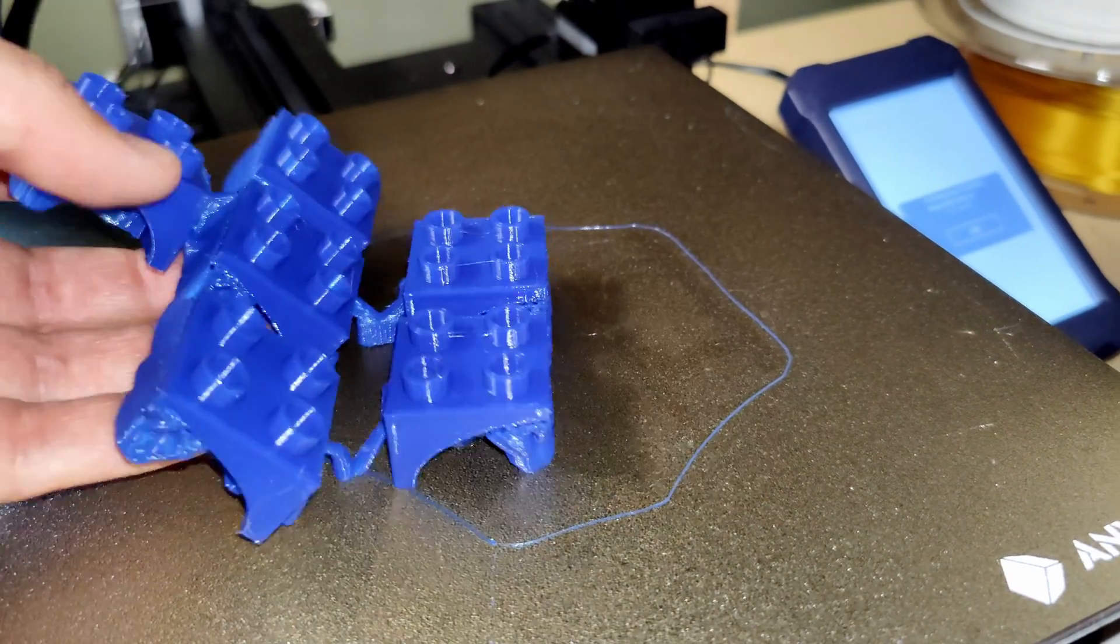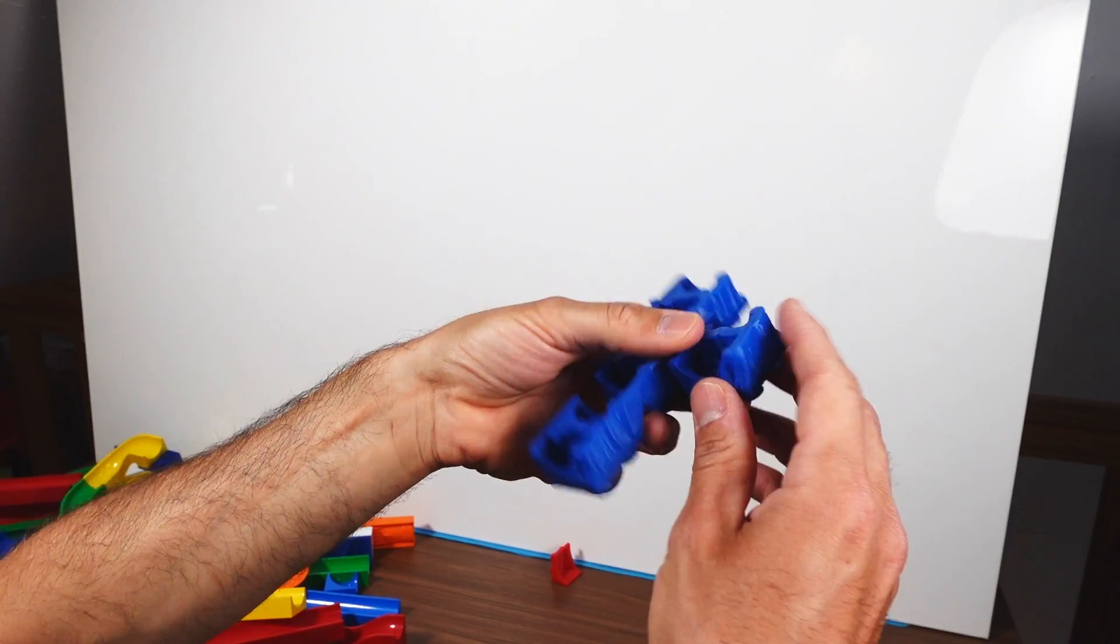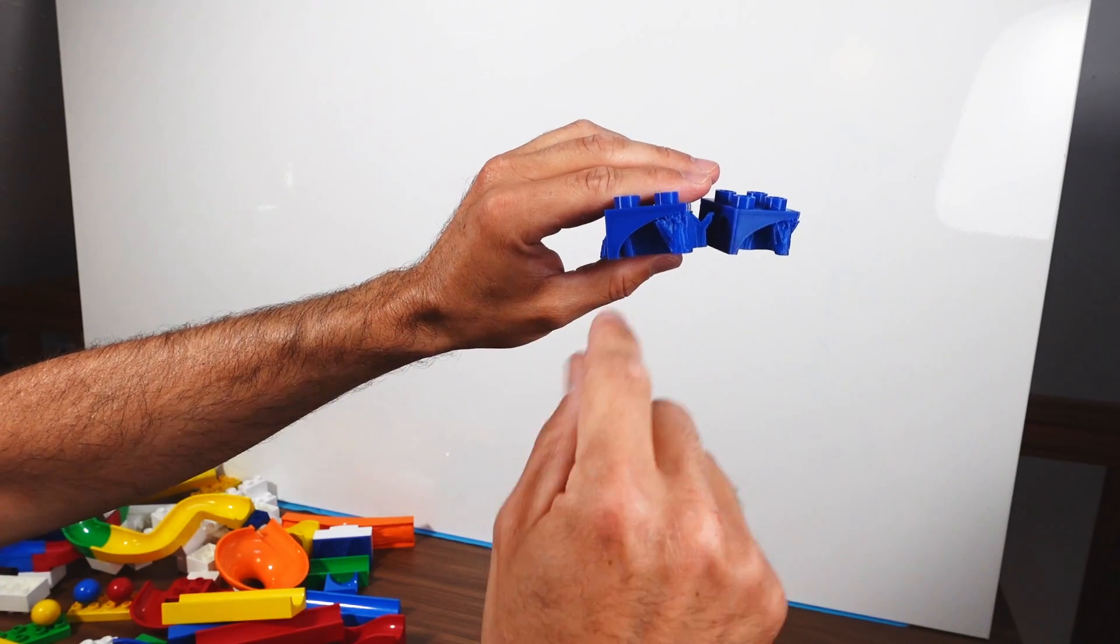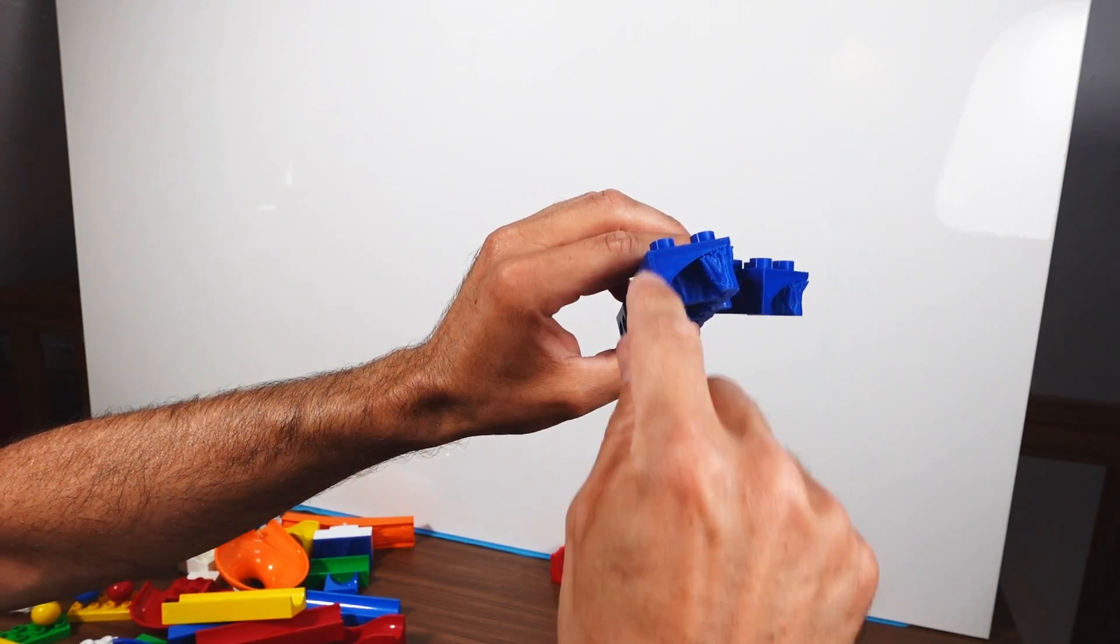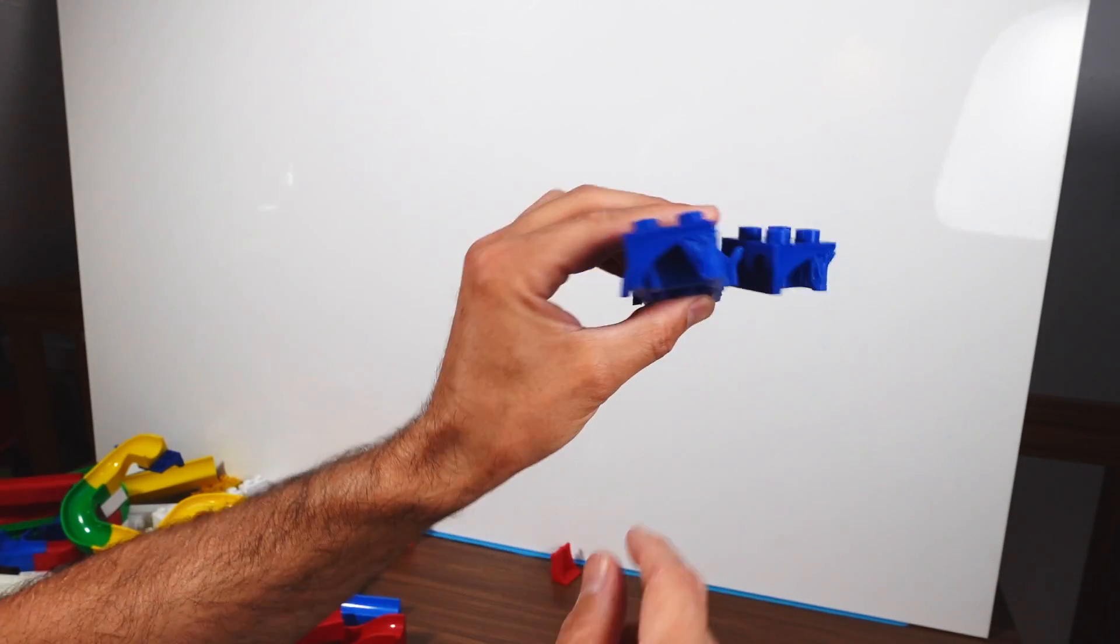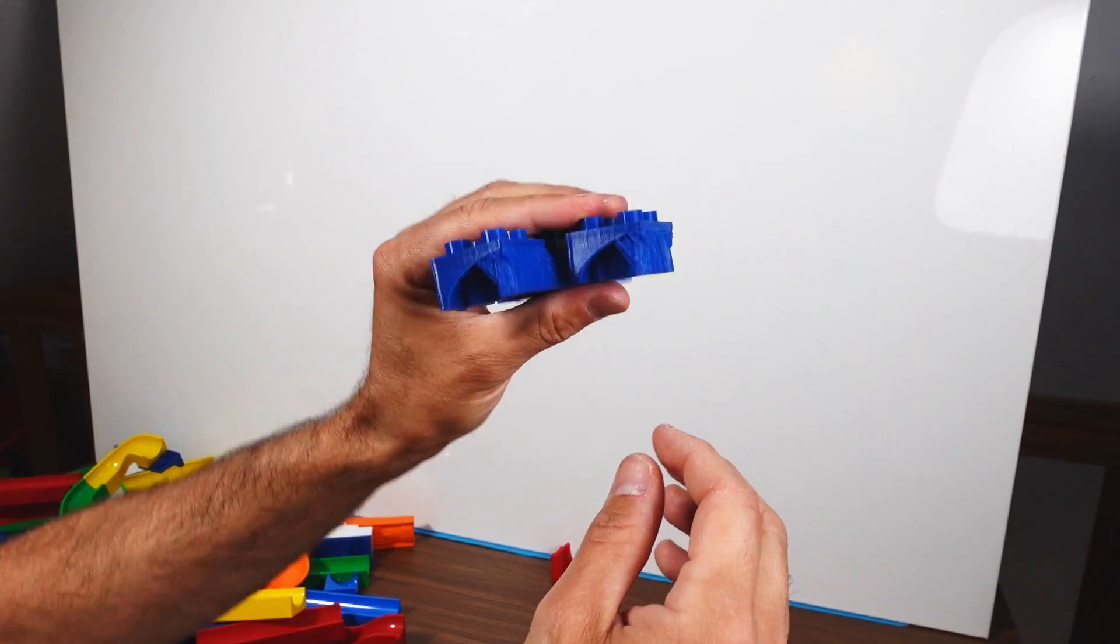This is what the things look like when they come off the 3D printer. You see here I printed them this way. This was the bottom and this is the top, and because the printer cannot print in thin air you need a support structure. This plastic here, that's basically not part of this object. It's a supporting structure that you have to remove.